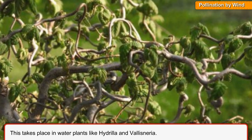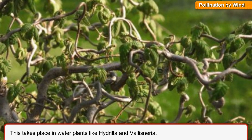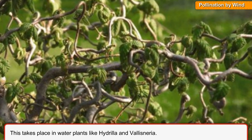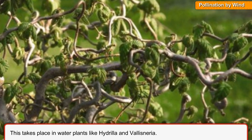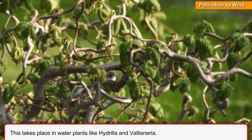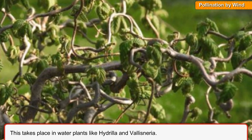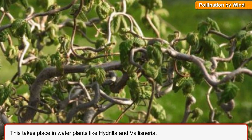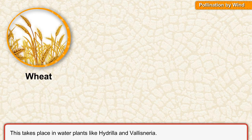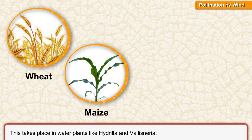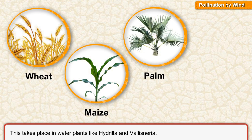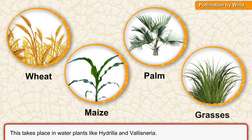The stigma is large and feathery to catch the wind-carried pollen grains. Examples of wind-pollinated plants include Wheat, Maize, Palm, and grasses.